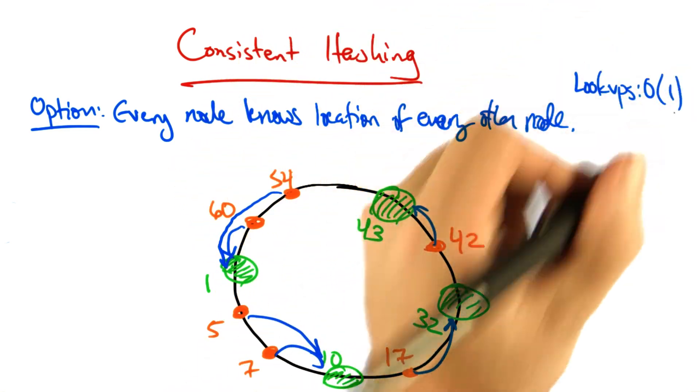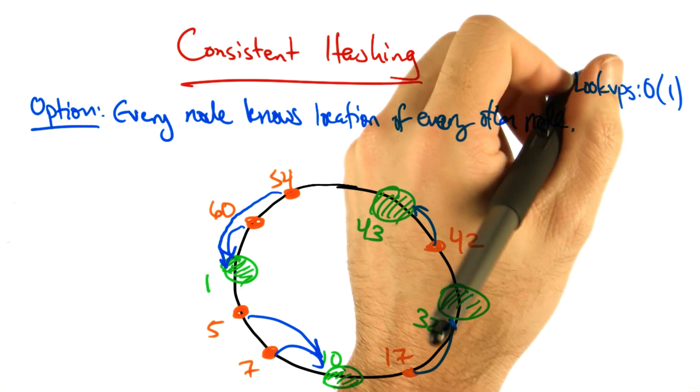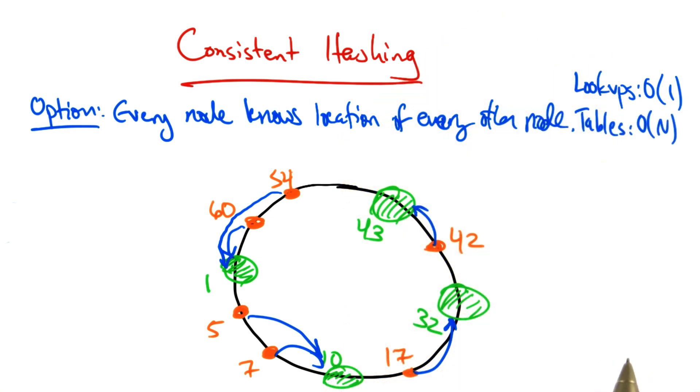In this case, lookups are fast. In fact, they're order one. But the routing tables are large. In particular, because every node needs to know the location of every other node in the network, the routing table must be order n, where n is the number of nodes in the network.